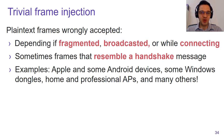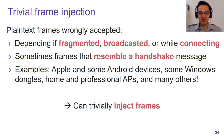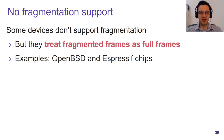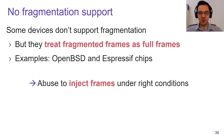Surprisingly, a lot of devices are affected by one of these vulnerabilities. For example, iOS and macOS were affected, some Android devices were affected, and home and professional access points were affected. These vulnerabilities make it trivial to inject frames. Perhaps even more surprising, devices that don't support fragmentation or aggregation were still vulnerable. Systems such as OpenBSD and certain IoT chips don't support fragmentation and treat all fragmented frames as full frames, but under the right conditions, this can still be abused to inject frames.